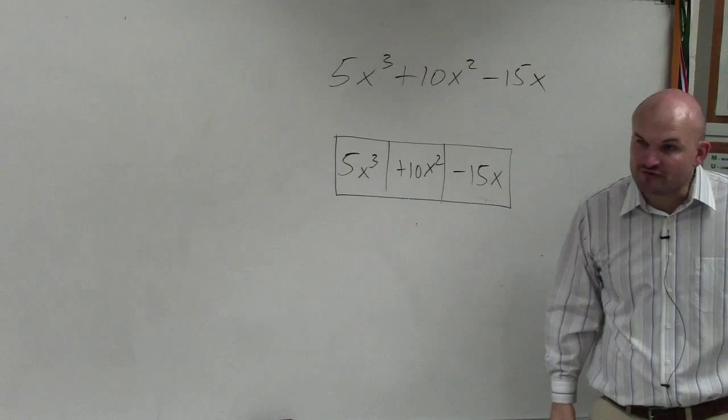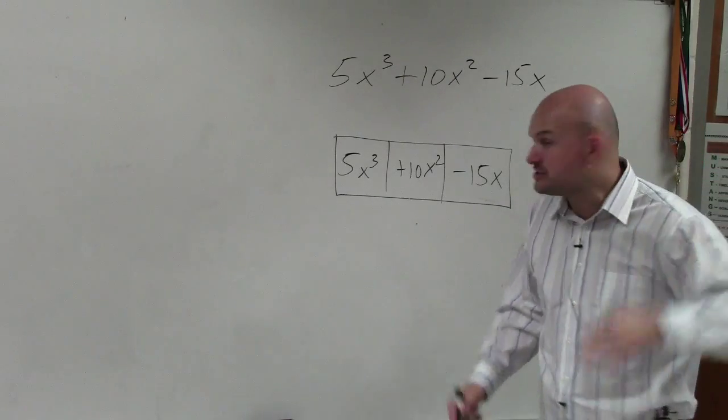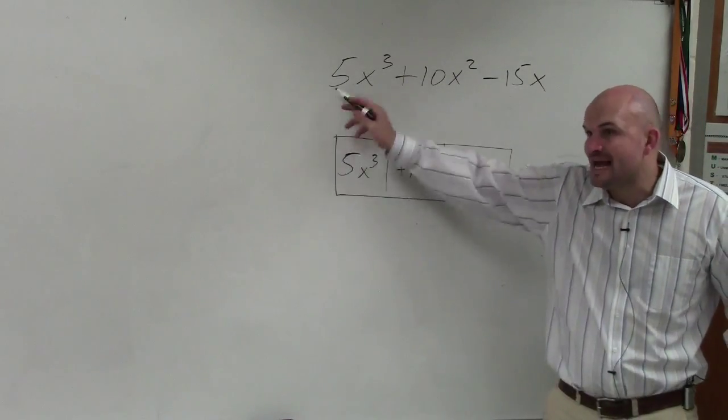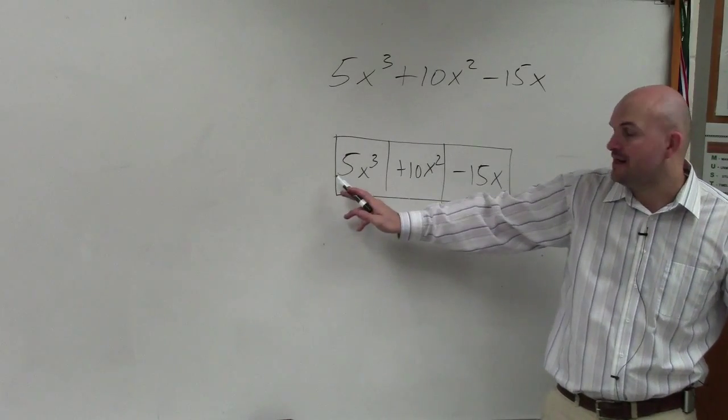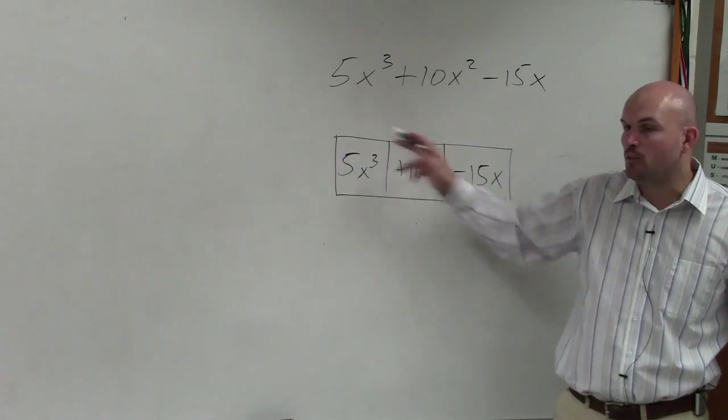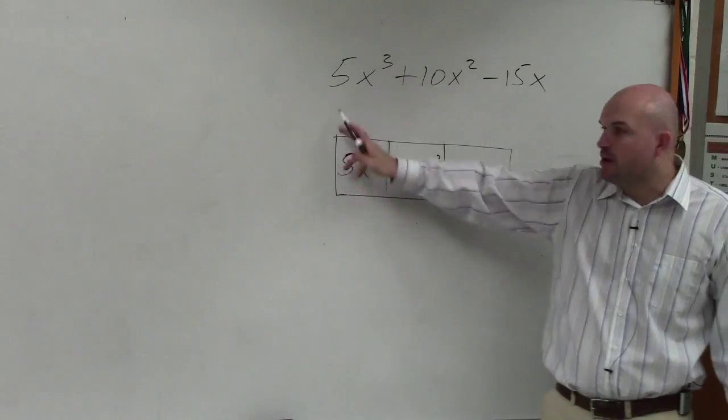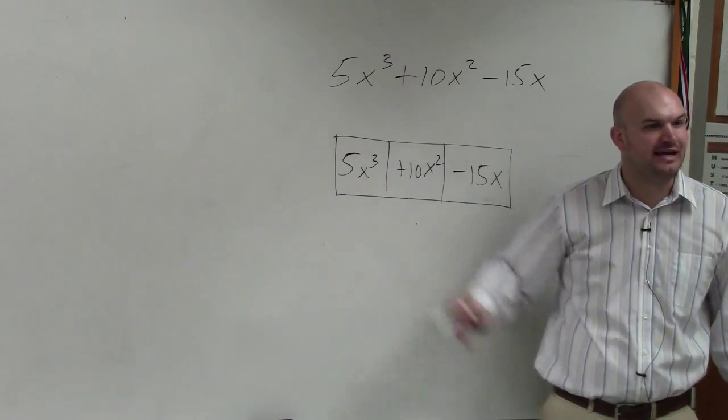And basically what we're looking for, when we're saying what are common factors, I'm basically asking you, what could be the length of this side length that I could multiply by a width to get each one of these areas? So what would be a common length that I could use?